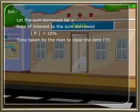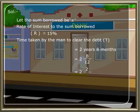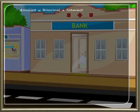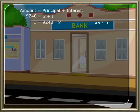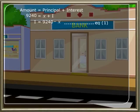The time taken is two years eight months, so T equals two and eight-twelfths, which equals eight by three years. The total amount paid is 9240 rupees. Since amount equals principal plus interest, we get 9240 equals x plus I, therefore 9240 minus x equals I. Let this be equation one.